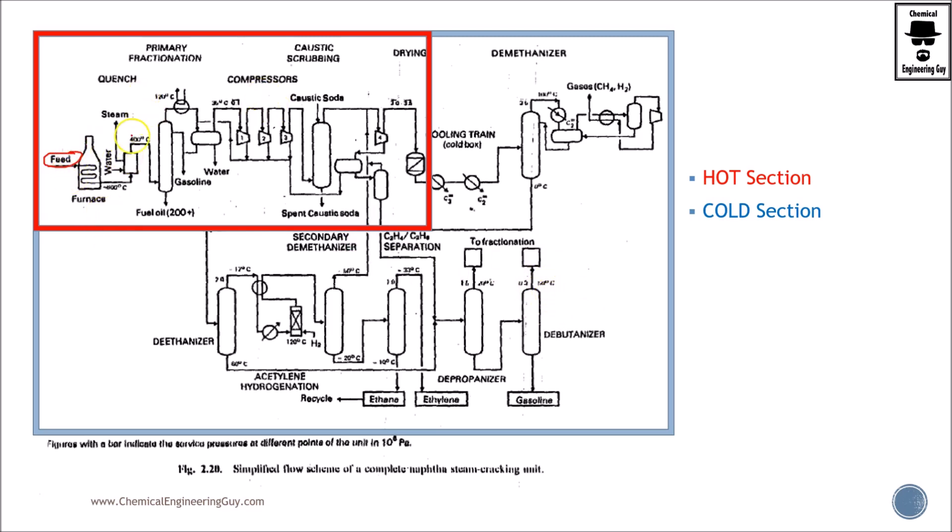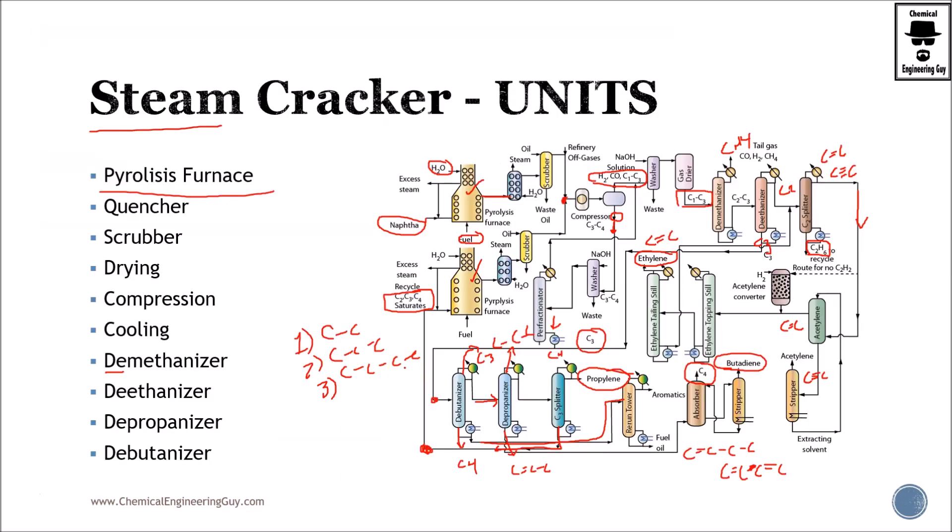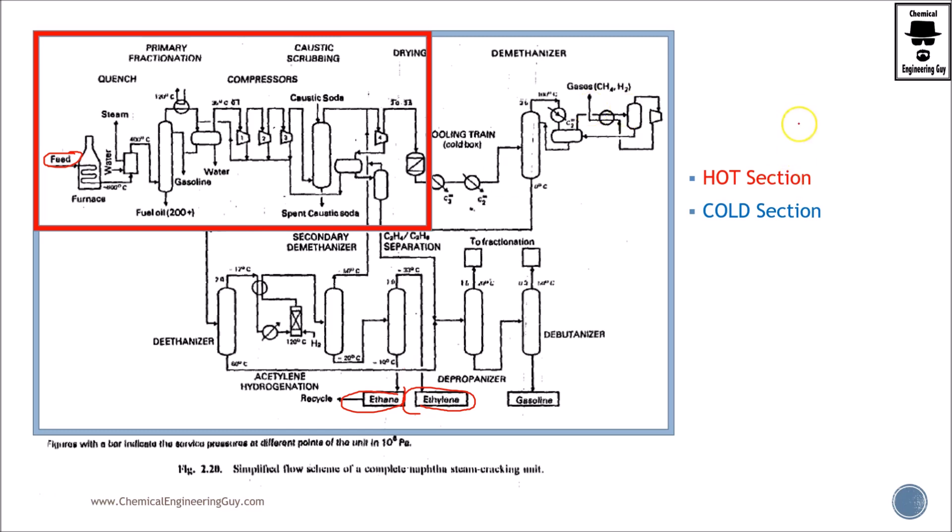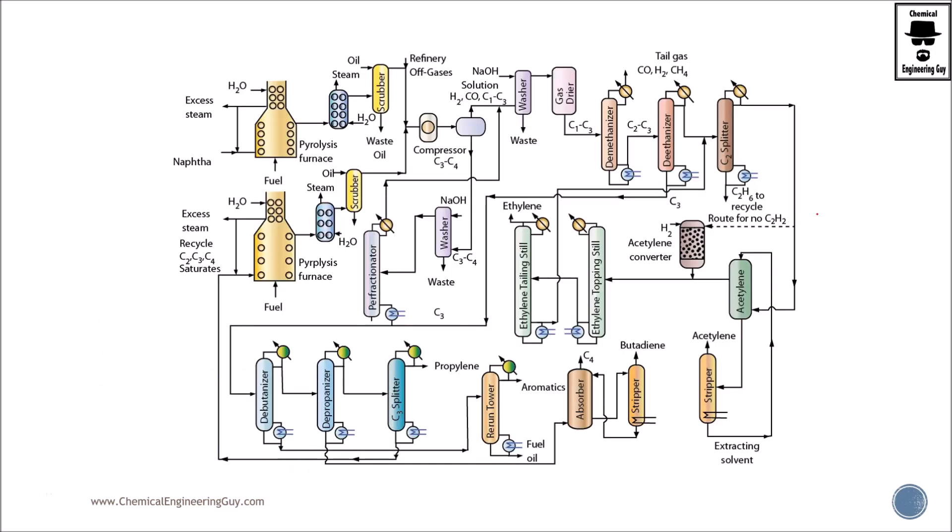This is exactly the same. You got your feed, furnace, steam, leftover material, cleaning, compression, caustic soda for cleaning, and then you got the light gases, secondary methanizer, gasoline, ethylene, ethane. It's exactly the same, just different arrangement. The important part right here is to detect and be sure that you can separate the hot section from the cold section. So now let's go more technical. Let's strip this process and let's see why is it so interesting and why do we get that many olefins from it.